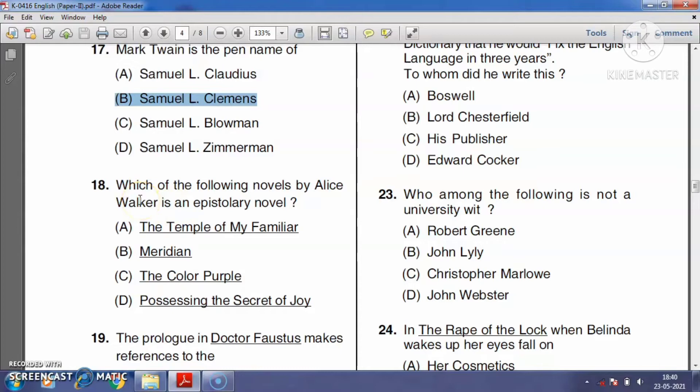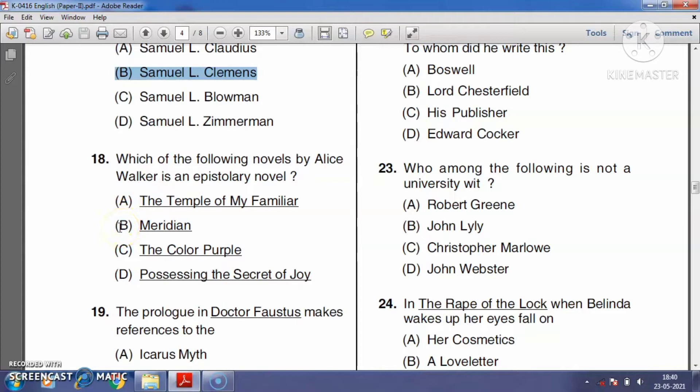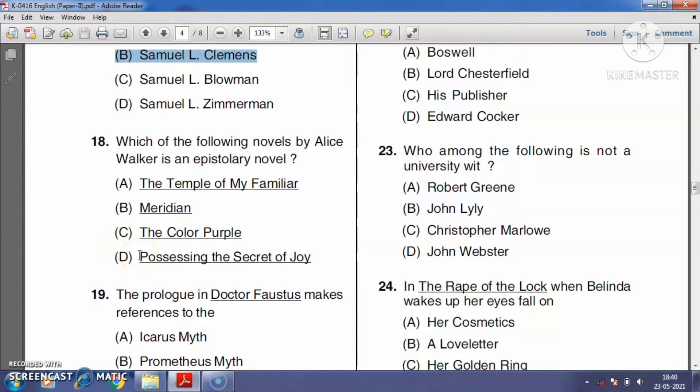Question number eighteen: Which of the following novels by Alice Walker is an epistolary novel? The Temple of My Familiar, Meridian, The Color Purple, or Possessing the Secret of Joy? Alice Walker is an American novelist known for her notable work The Color Purple, an epistolary novel published in 1982. It won the Pulitzer Prize and the National Book Award. The novel is about a poor, uneducated girl Celie living in the United States. She writes letters to God because her father Alphonso beats and rapes her. Alphonso has already impregnated Celie, resulting in the birth of a boy, Adam. Celie thinks Alphonso kills Adam. The novel is all about the exploitation of women. So the right answer is option C.